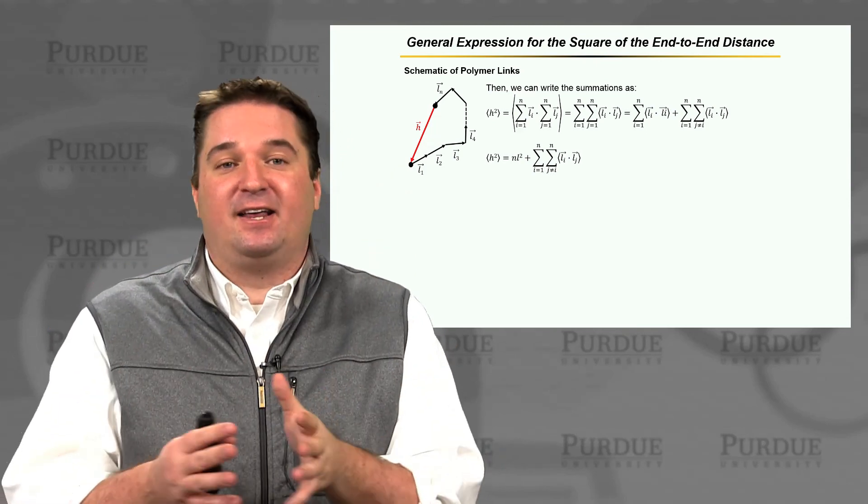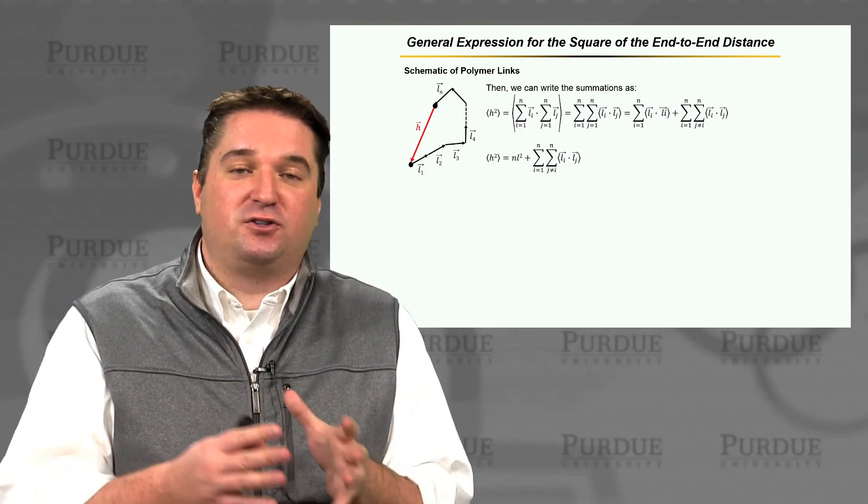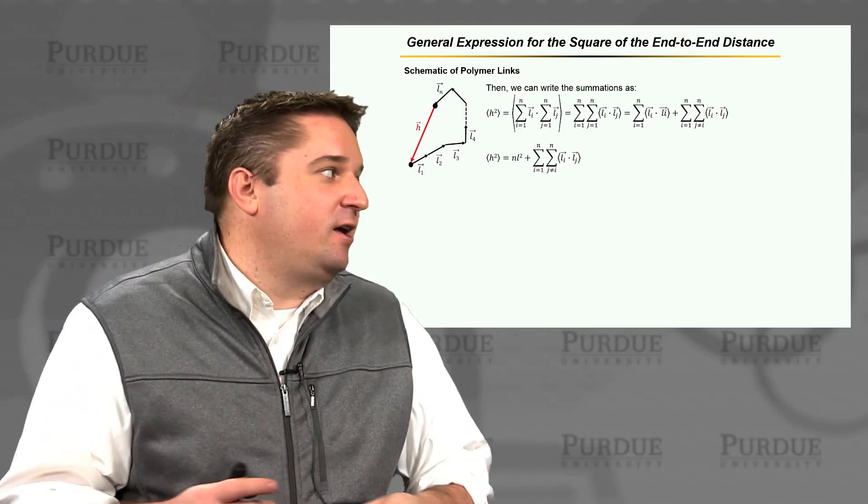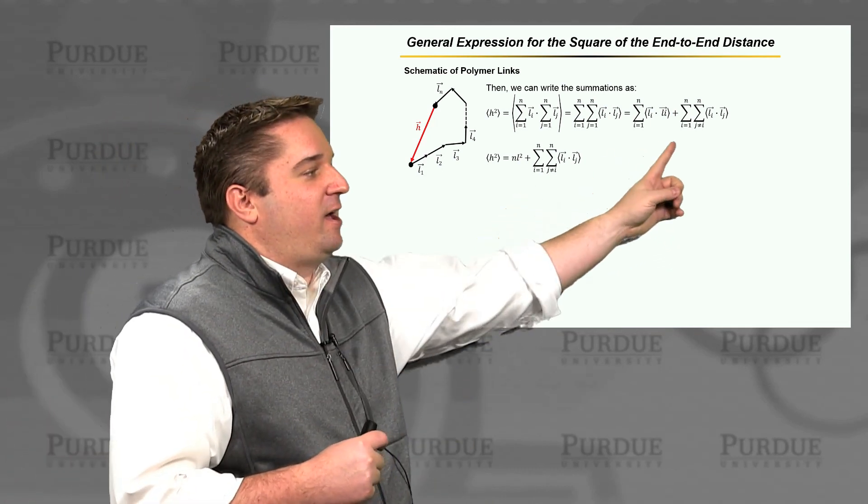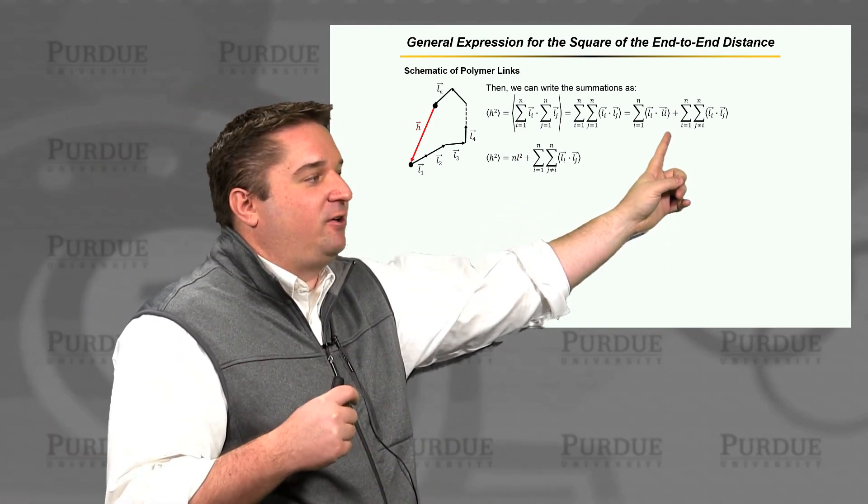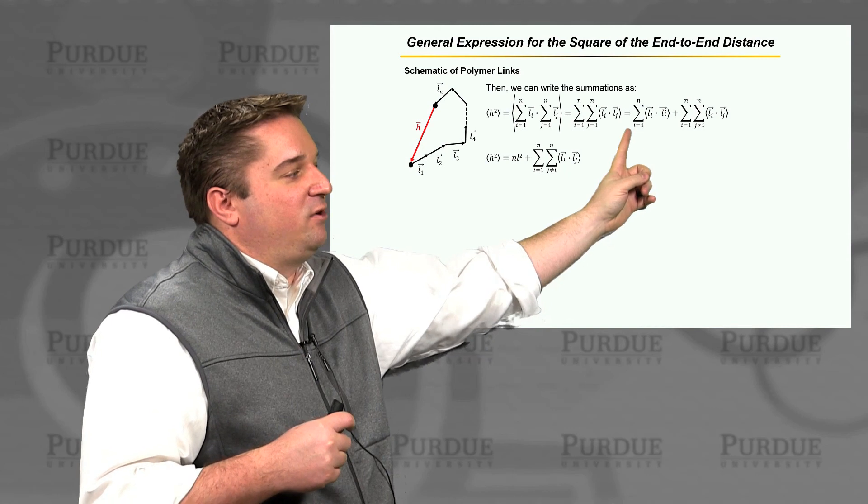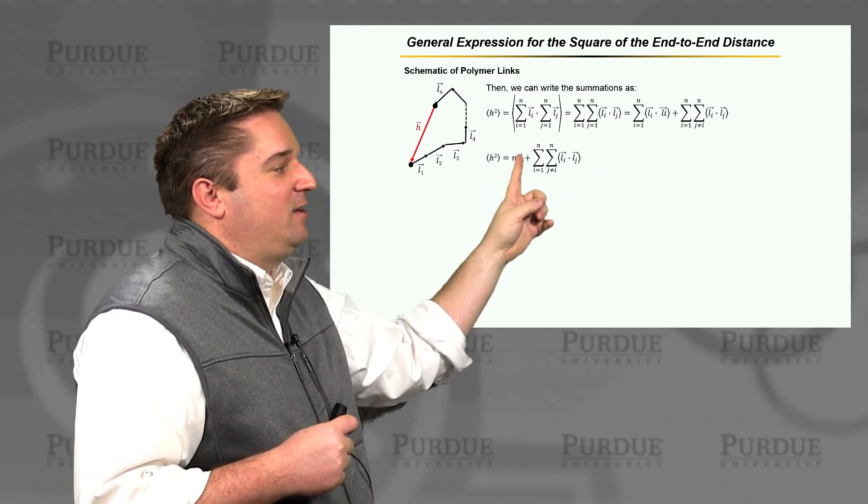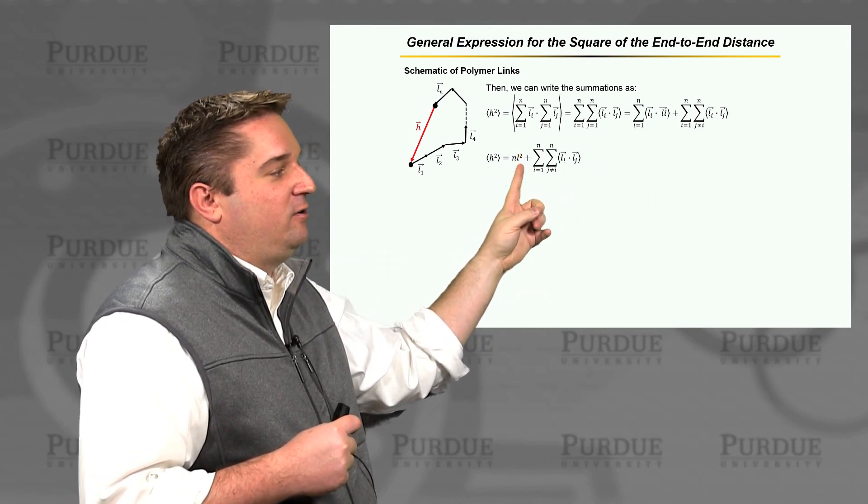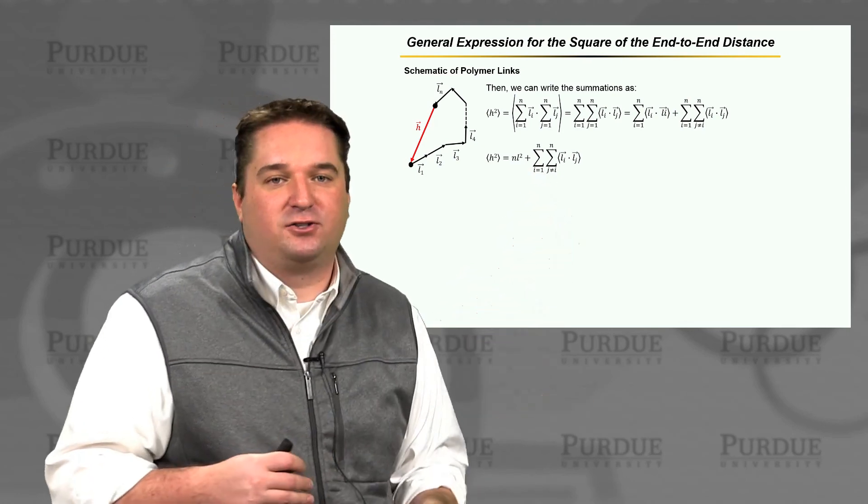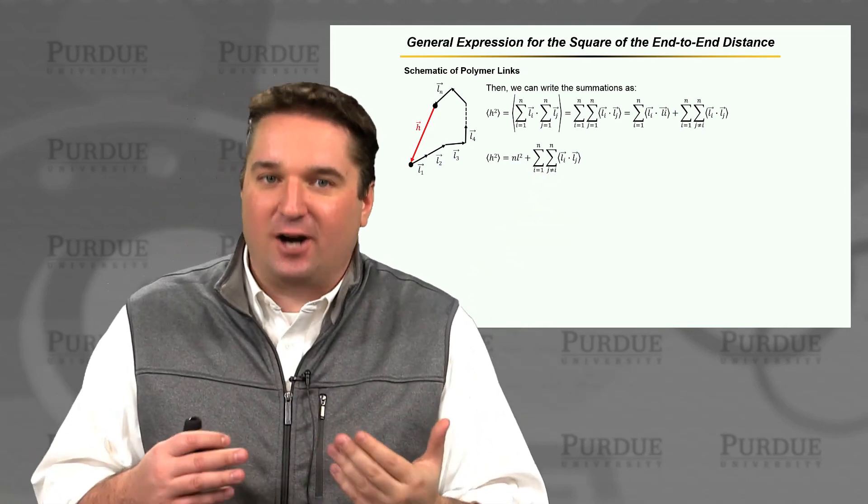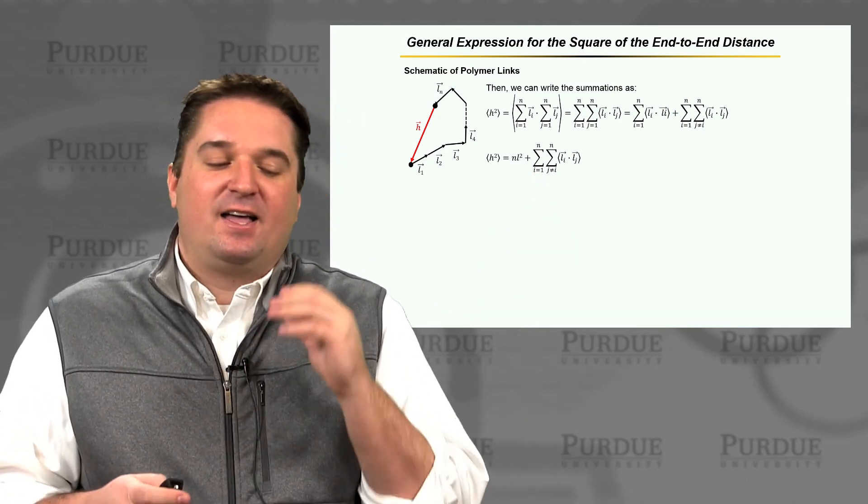And then we can still add on Li dot Lj, where j does not equal i. So we're just breaking this down and taking out all the things that are the same versus all the things that are different. Now, if we do that, we know that Li dot Li is just L squared. And if we're going to do it n number of times, we get an n in front of it. So we get nL squared, plus this cross product term of all i's that are not j's.